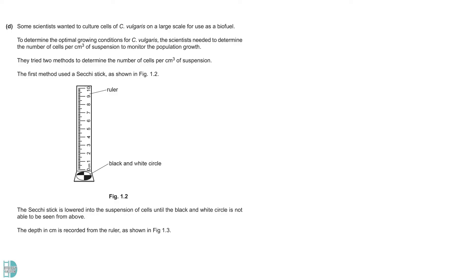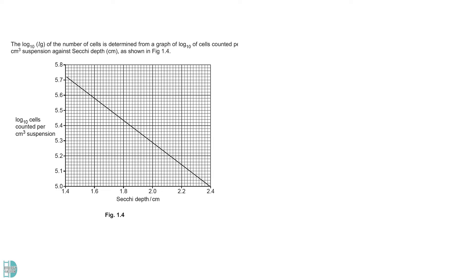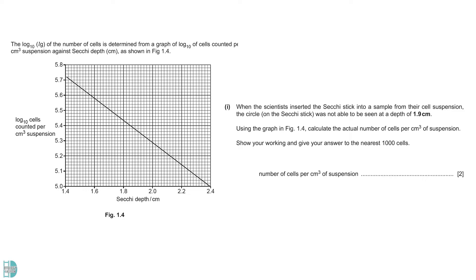In Part D, we have a diagram of the circuit stick. It can be used to determine the number of cells per cm³ of suspension. The circuit stick is lowered into the suspension of cells until the black and white circle is not able to be seen from above. Then we can use a graph to determine the number of cells based on the depth. D1 wants you to calculate the actual number of cells per cm³ if the circle cannot be seen at a depth of 1.9 cm. First, read the log₁₀ cell number from the graph at a depth of 1.9 cm. The graph shows that the log₁₀ value is 5.36.